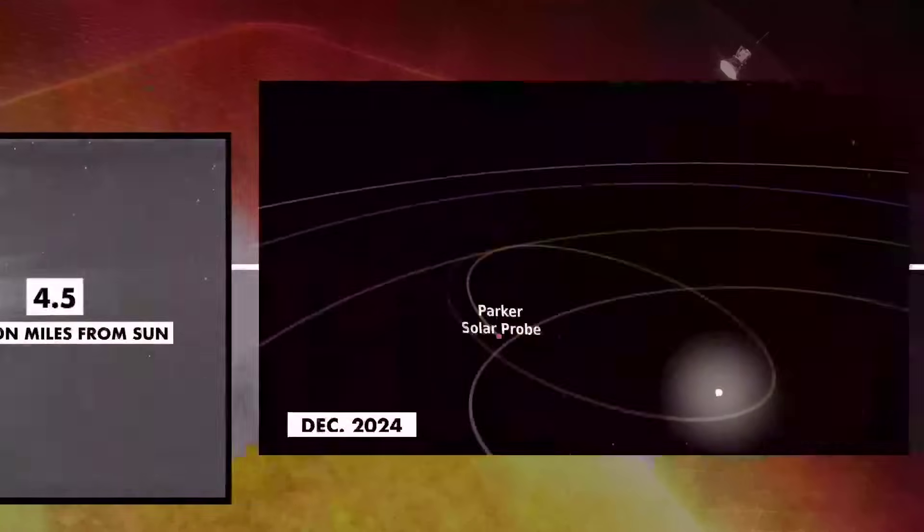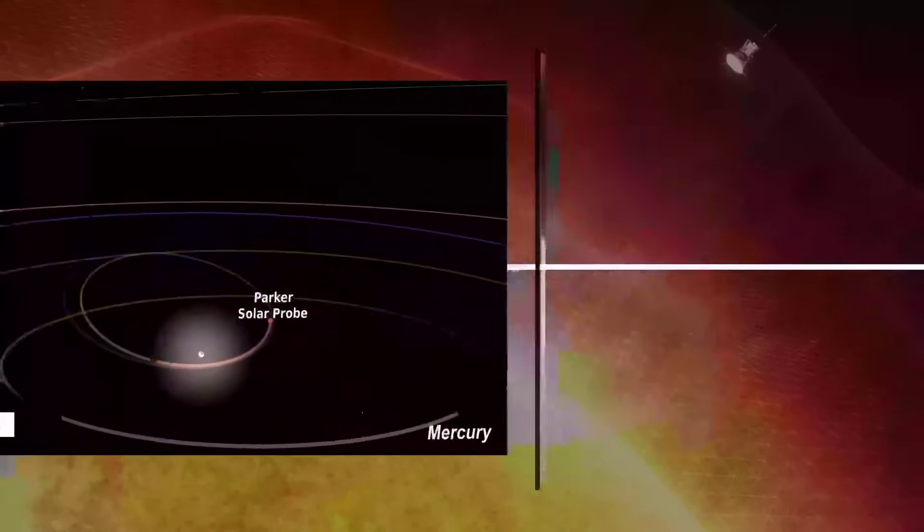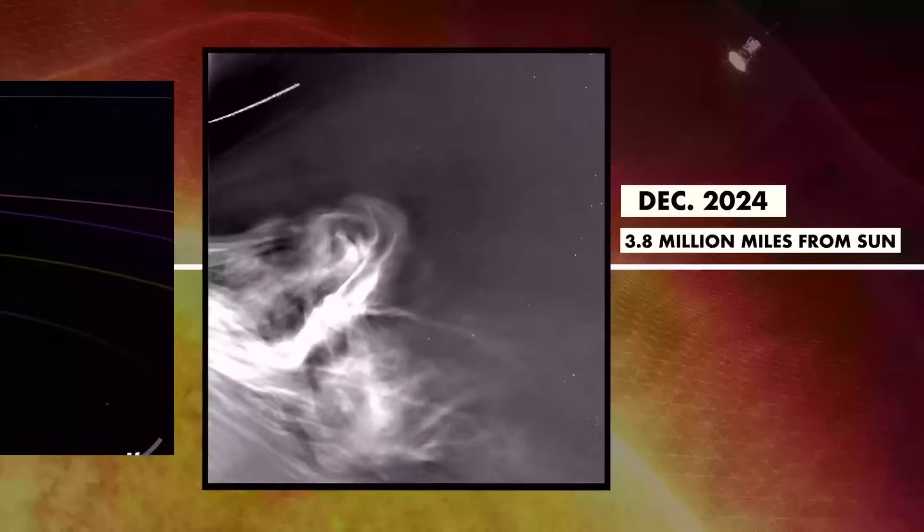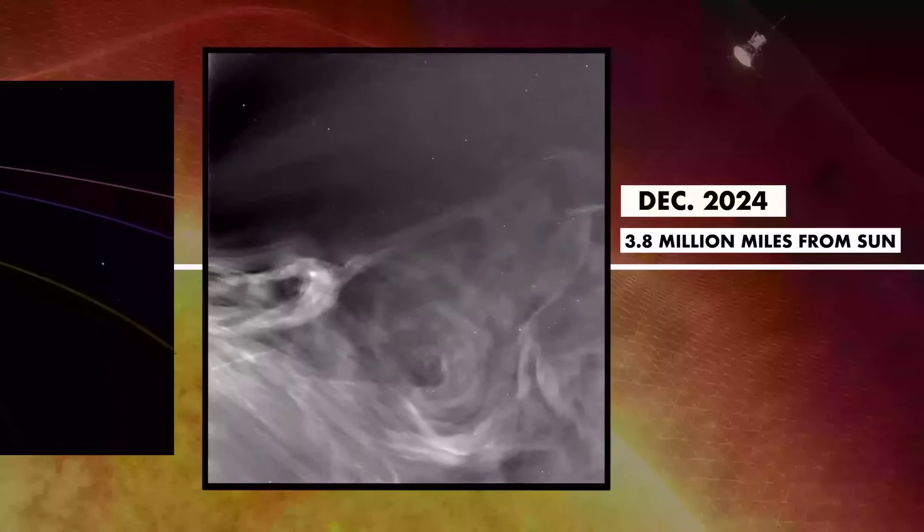In December 2024, it made its record-breaking closest approach to the sun. That's when it took these historic close-ups of the solar atmosphere, images that are changing the way we understand our star.